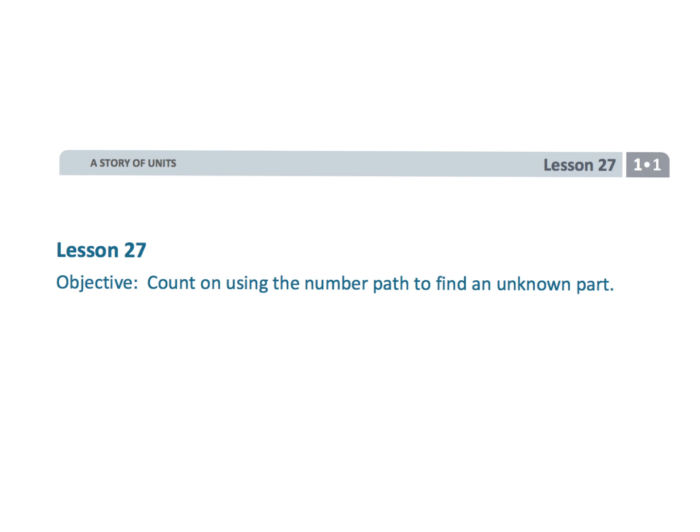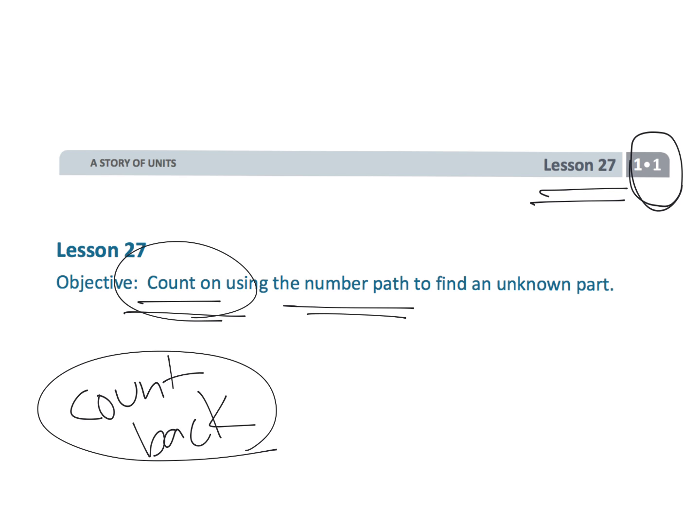And that really wraps up grade 1, module 1, lesson 27, where we're still using the count-on method, but we're also using the count-back method. And then we're using a number path, but the idea is let's compare the count-on method with the count-back method and decide which one is most efficient rather than the word best.